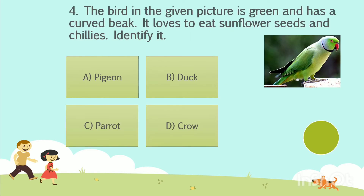To the fourth question now. The bird in the given picture is green and has a curved beak. It loves to eat sunflower seeds and chilies. Identify it. Option A: Pigeon. Option B: Duck. Option C: Parrot. Option D: Crow. Your time starts now. The answer is Option C, Parrot.